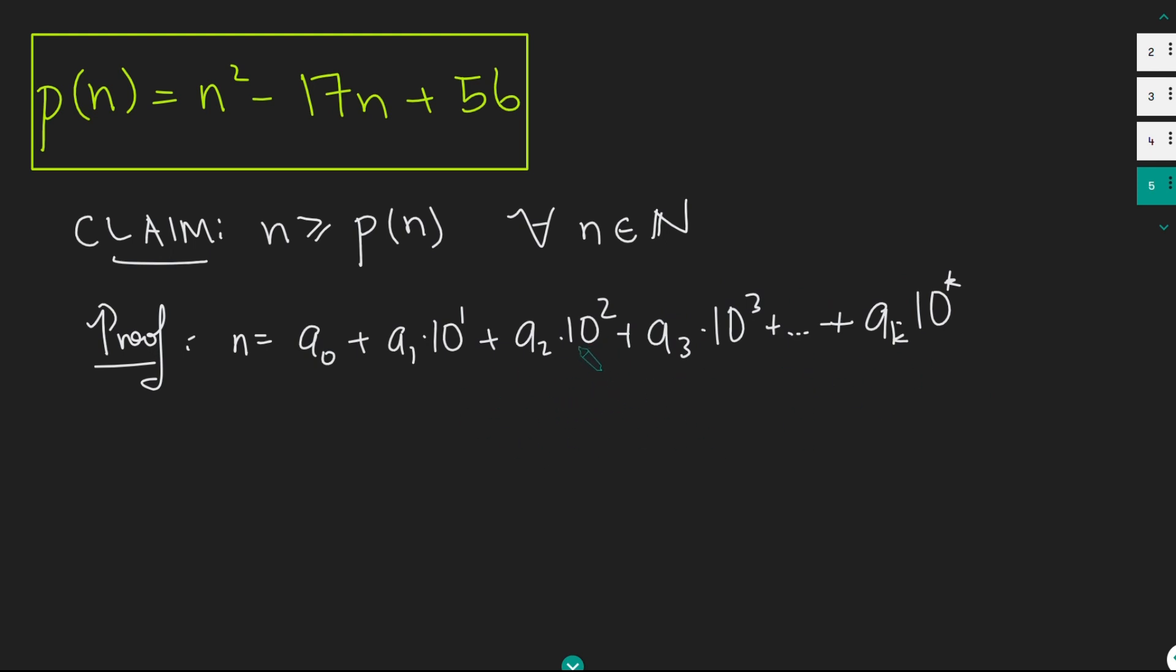And now, well, what can I say if this is n, what would p of n be? p of n is simply going to be the product of the digits, which are precisely a0, a1, a2, a3 and so on up to ak. So a0, a1 and so on all the way up to ak, like so. In fact, let me write the ak minus 1 term here as well.